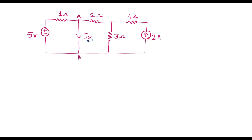I will simplify this circuit. Here we can see there is a 2 amp current source connected in series with a 4 ohm resistor. One thing we should remember: if a resistor is connected in series with a current source, that resistance has no significance. We can remove this resistor and short it; it does not make any difference. So it is as good as there is no resistor there. I will convert the current source into a voltage source because there is a resistor in parallel with the current source. Considering these two, I will convert this current source into a voltage source. To convert, we apply Ohm's law: V = IR. Here I is 2 and the resistor value is 3, so the magnitude of the voltage source is 6 volts.